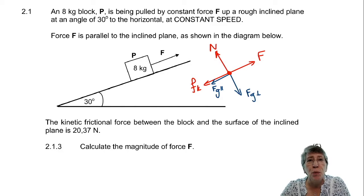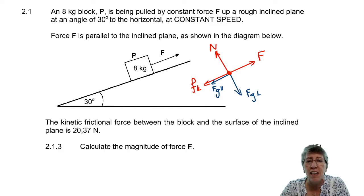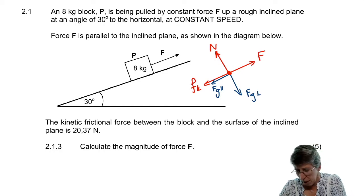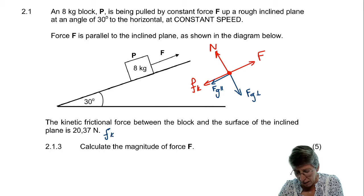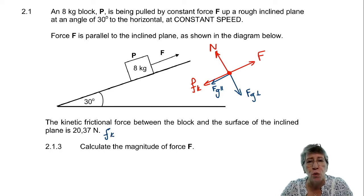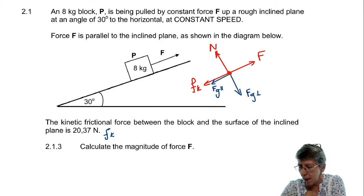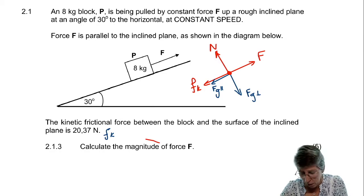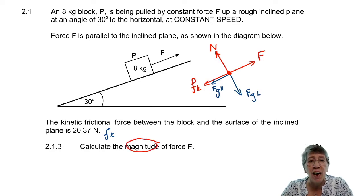In 2.1.3, they tell us that the kinetic frictional force between the block and the surface of the inclined plane is 20.37 N. So we have the value for the kinetic frictional force, and now they ask us to calculate the magnitude of force F. Remember, for magnitude, I don't have to include direction.